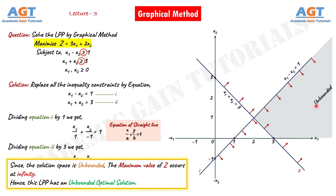Since the solution space is unbounded, the maximum value of Z occurs at infinity. Hence, this linear programming problem has an unbounded optimal solution. This was an example of an unbounded optimal solution by the graphical method for a linear programming problem. In the next lecture we will look into examples for the case of no feasible solution by graphical method.